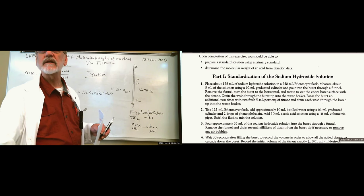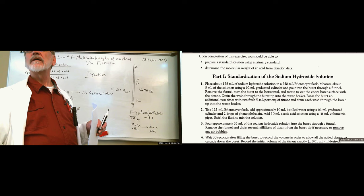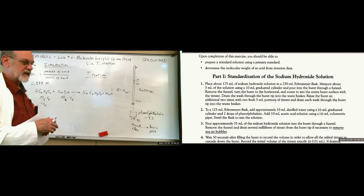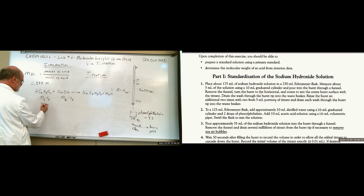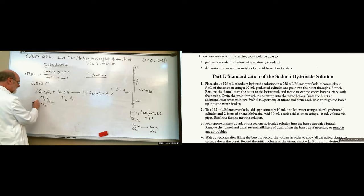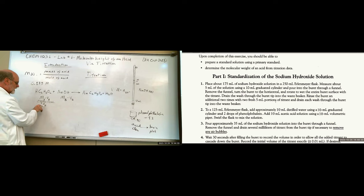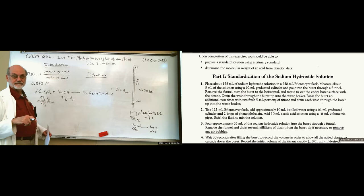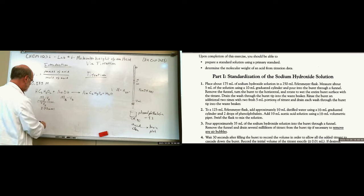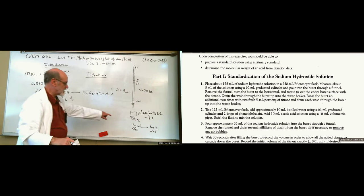The method calls for exactly 10 milliliters of acetic acid. We have a known concentration of 0.873 molar. Multiply those two together and we get — actually not moles but millimoles — 8.73 millimoles contained in the beaker.